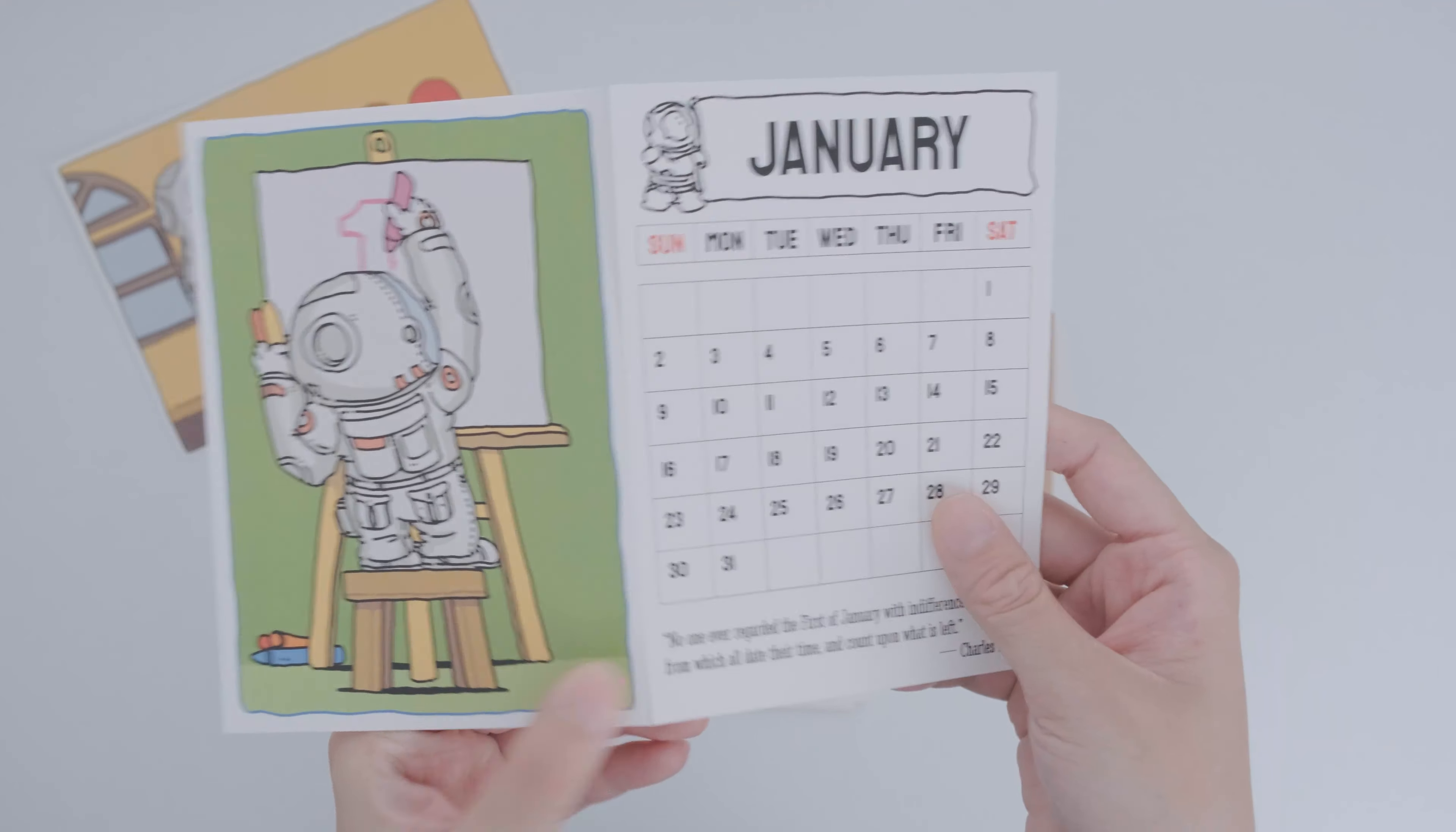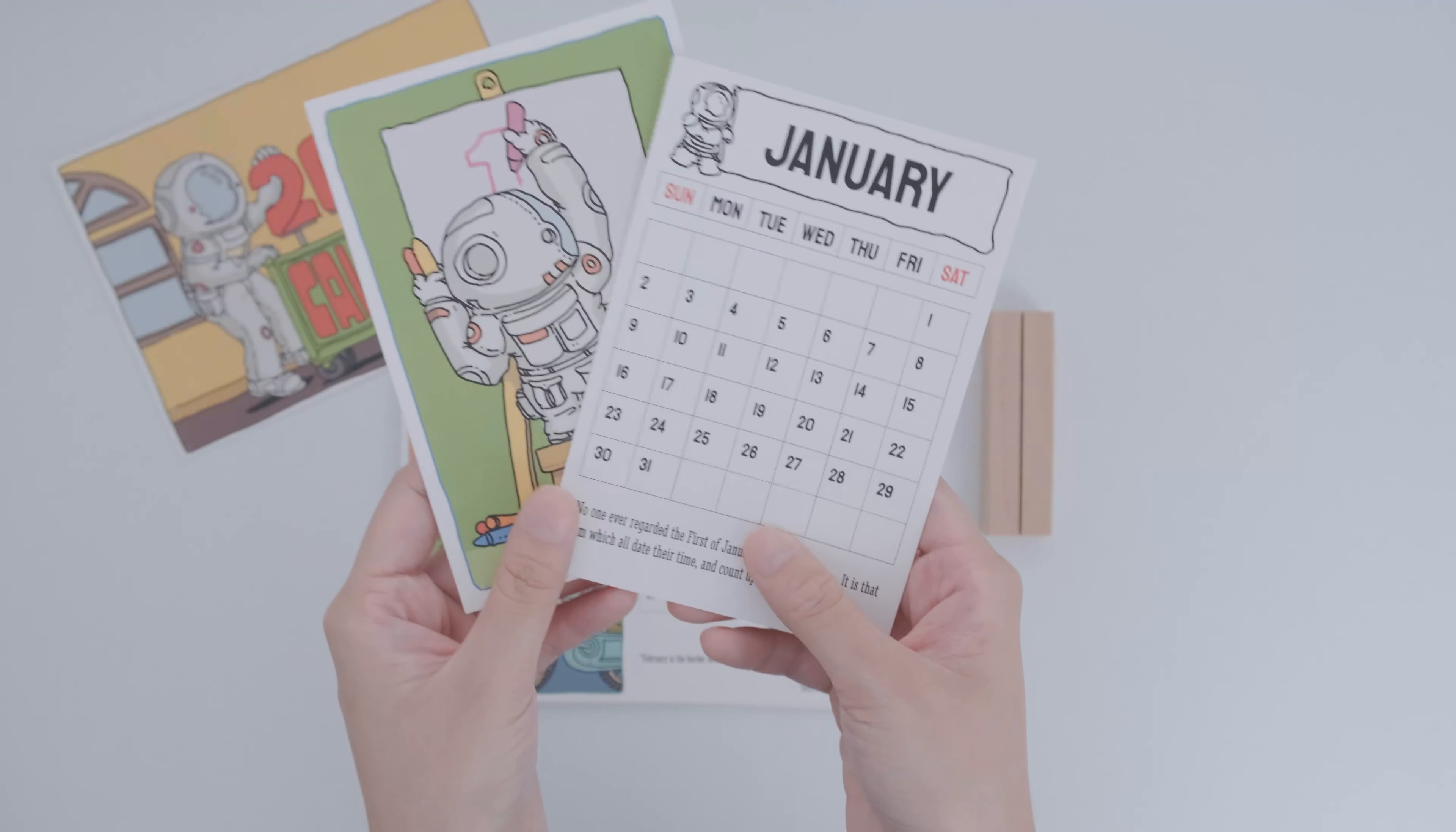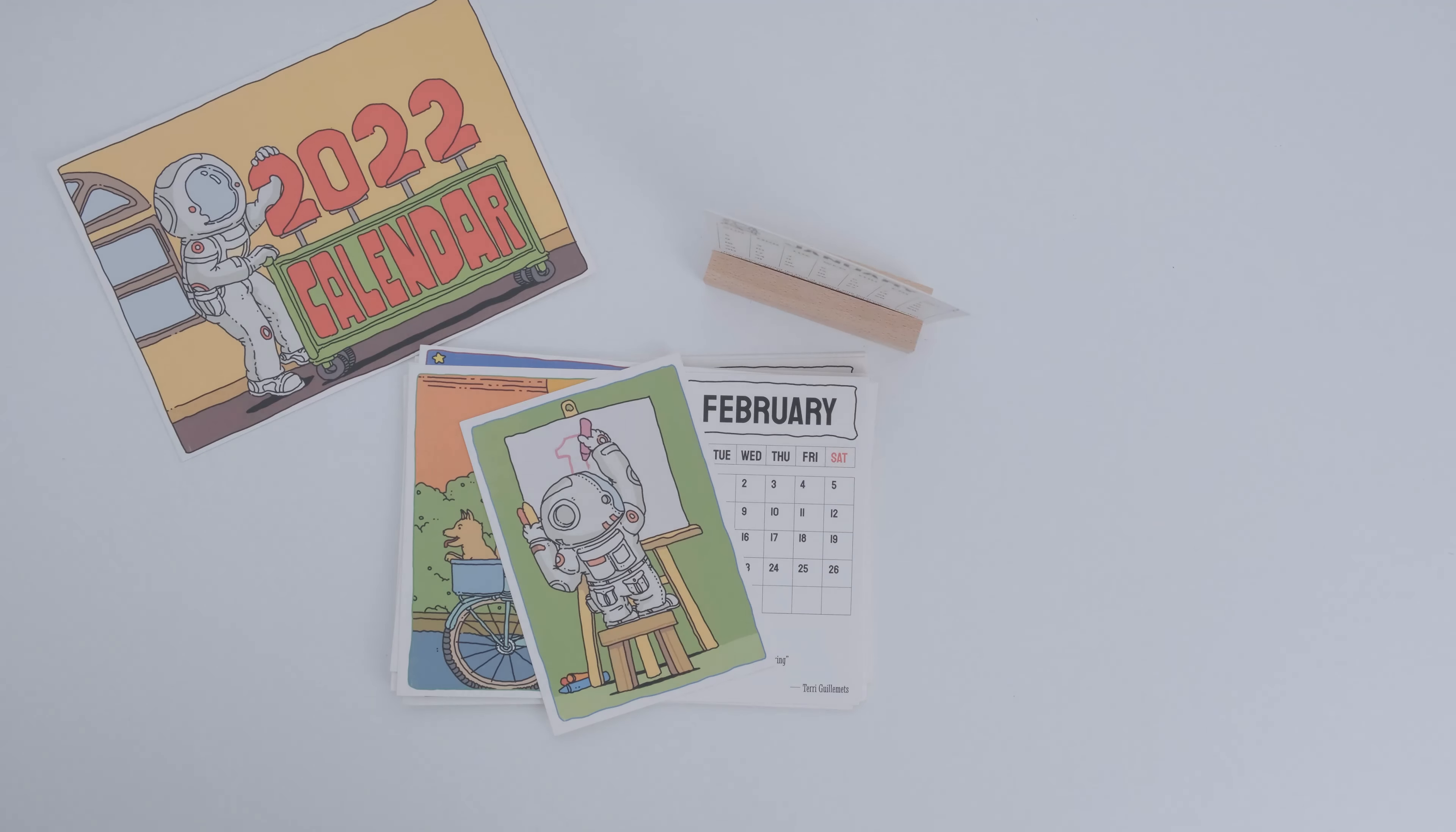This year we've added some new features to the calendar. First of all, each card is divided into two parts. The left side is our drawing while the right side is the calendar. We added a die cut part in the middle so you can tear off the calendar after use and leave our drawings as a collection.